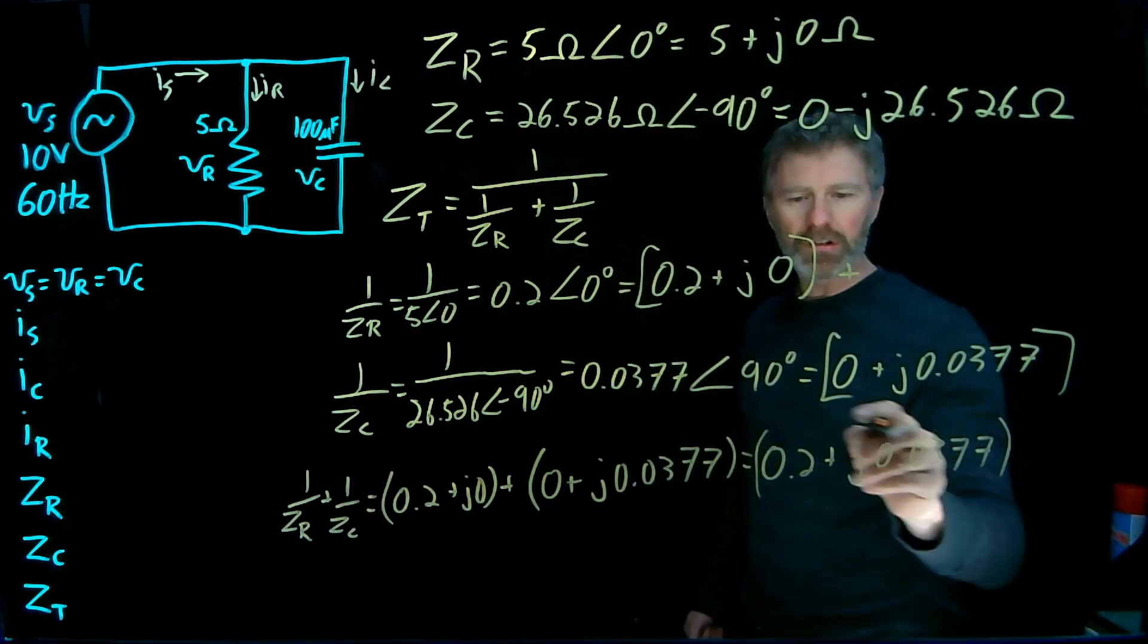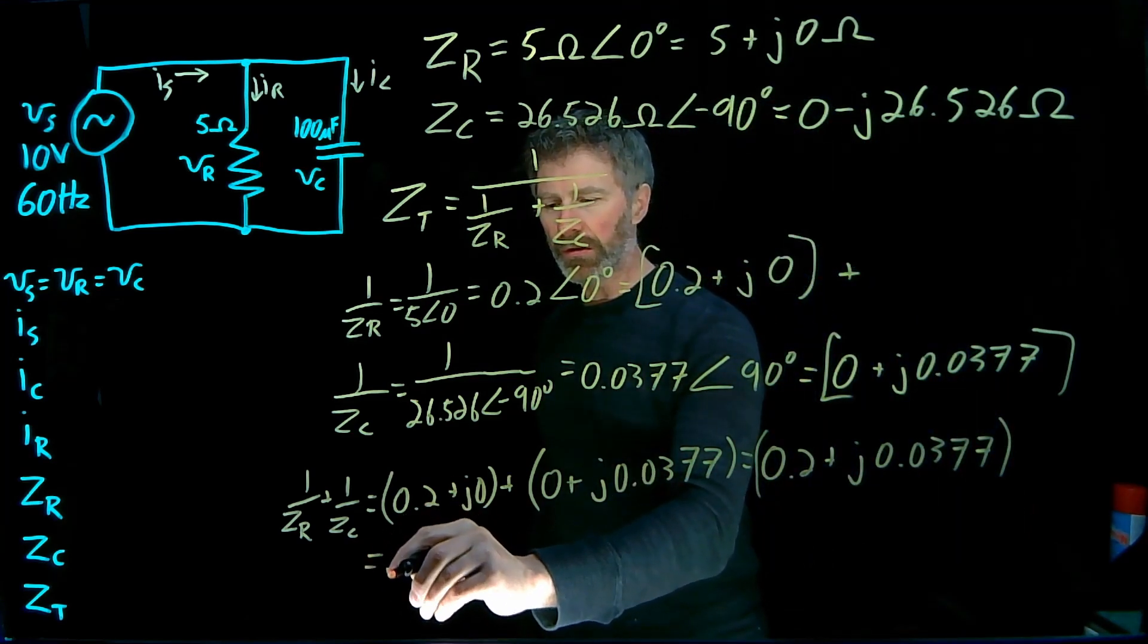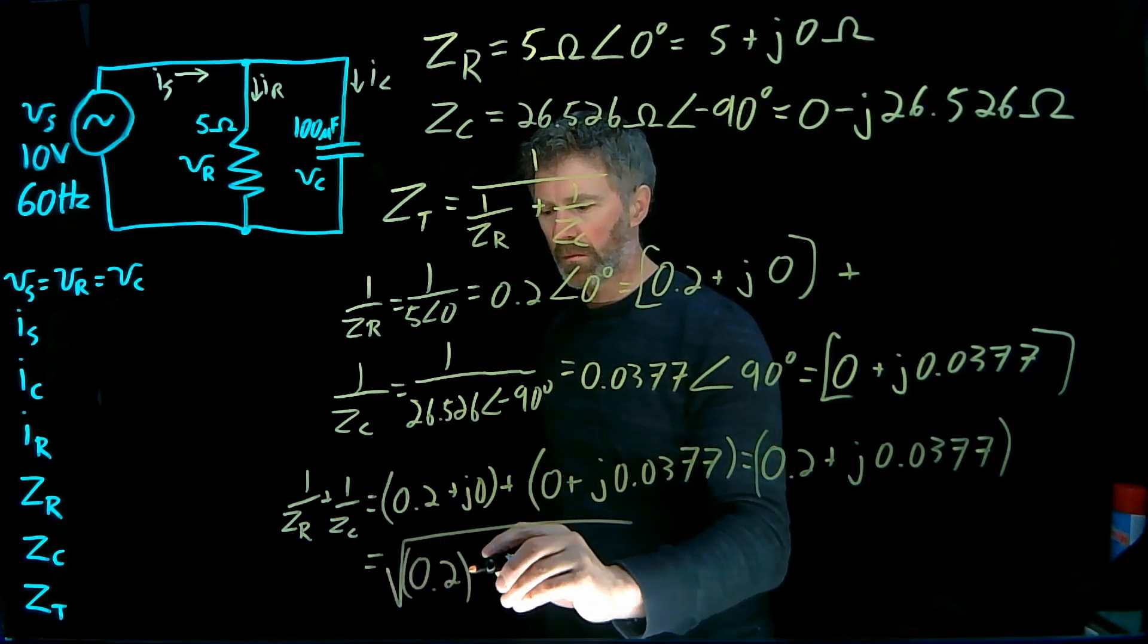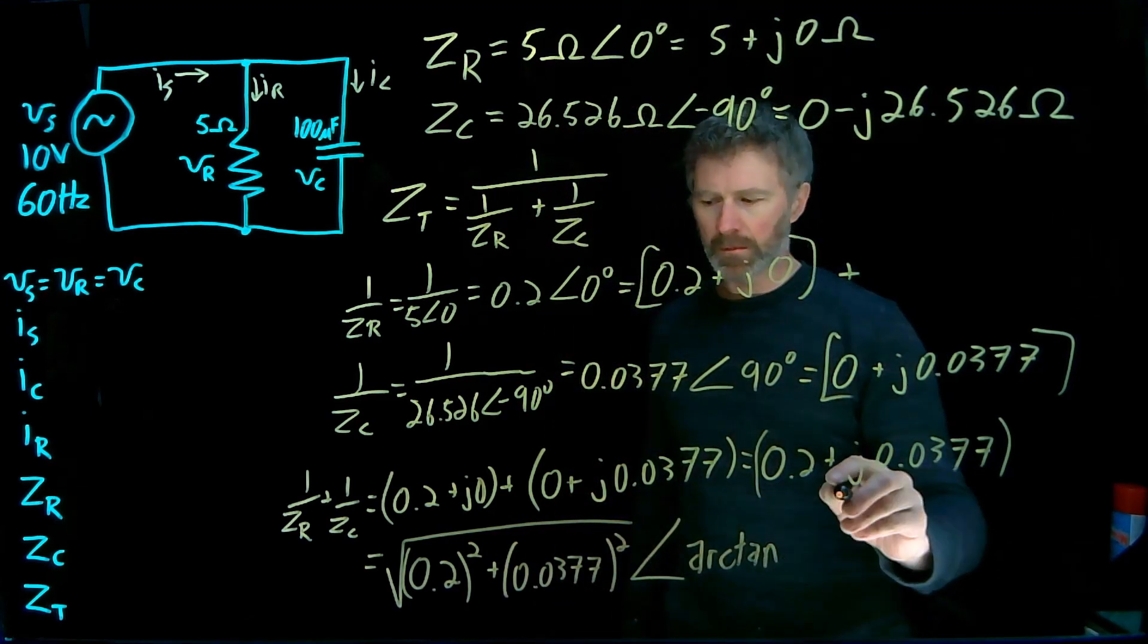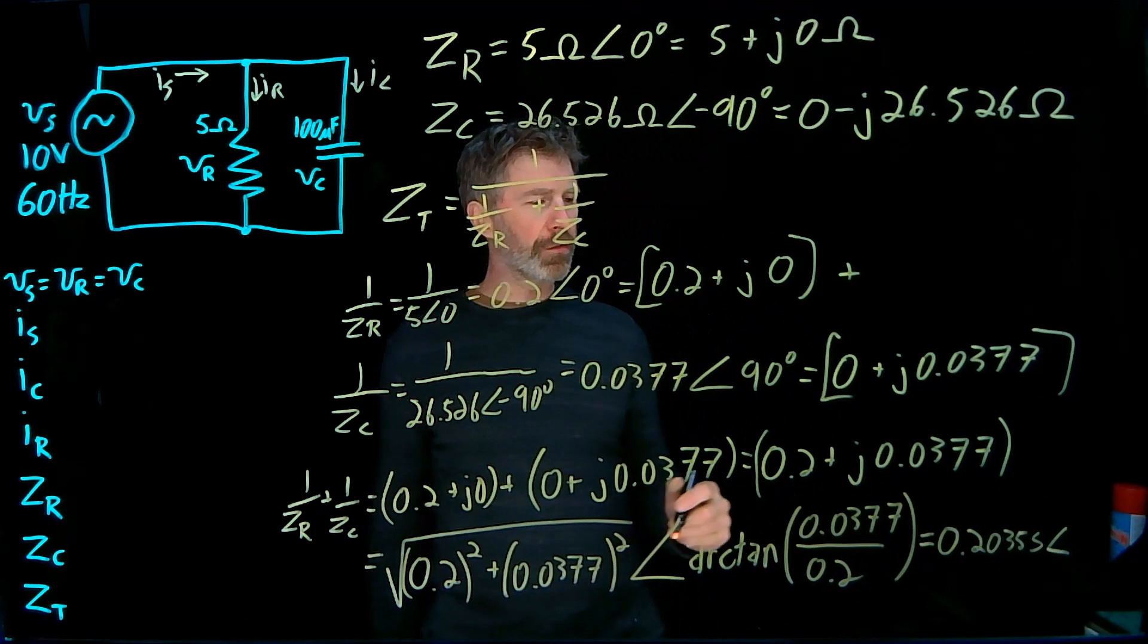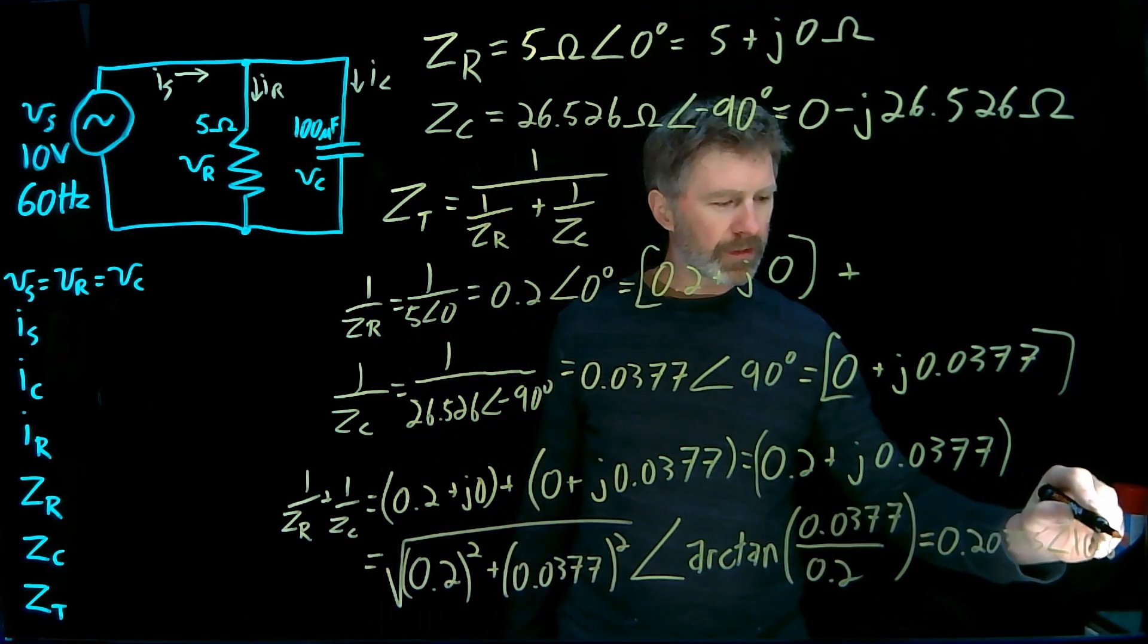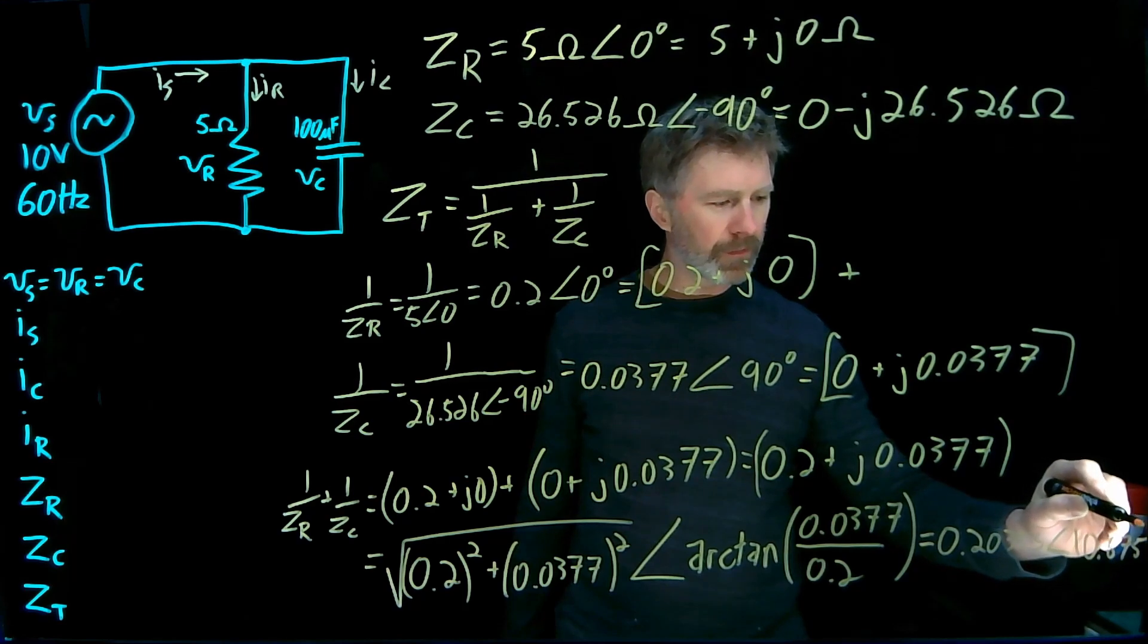In order to do the inverse of this, it's much easier if that's in polar notation. So that then will be equal to the square root, 0.2035 Siemens with a phase angle of 10.675 degrees.